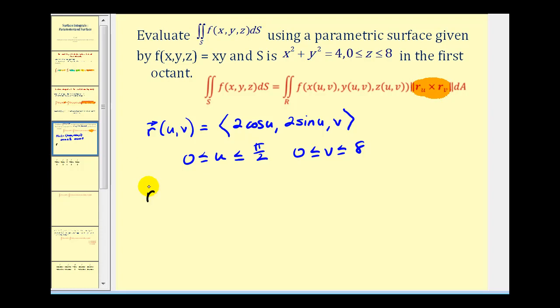So let's find the partial derivative of r with respect to u. That's going to be negative two sine u, two cosine u, and zero. Then the partial derivative of r with respect to v. That'll just be zero, zero, and one.